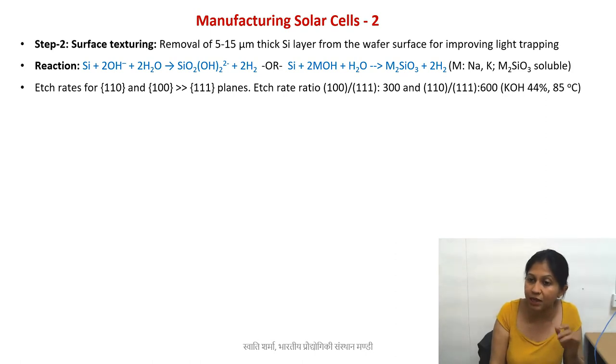If your KOH is at 44-45% solution at 80-85°C temperature, the etch ratios shown on the screen are: 100 to 111 is about 300, and 110 to 111 is about 600 times. One plane etches faster than the other.